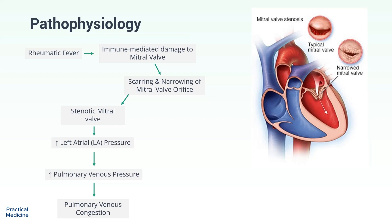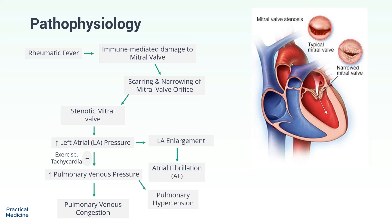Anything that increases blood flow across the mitral valve, such as exercise, tachycardia, etc., exacerbates the pulmonary venous hypertension and associated symptoms. Elevated left atrial pressure leads to left atrial enlargement, which can lead to the development of atrial fibrillation, or AFib. Long-standing mitral stenosis can also result in pulmonary hypertension and ultimately right ventricular failure.